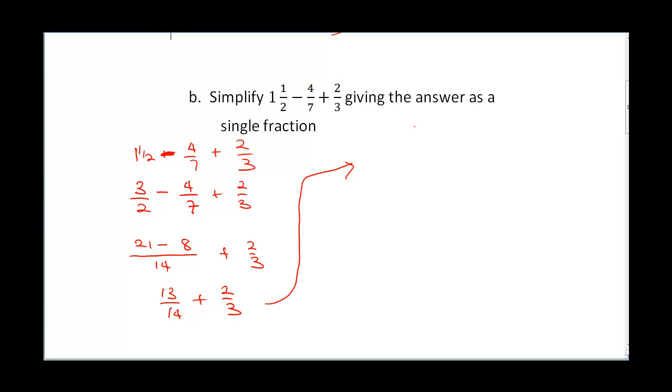At this point, the LCM of 14 and 3 is going to give us 14 multiplied by 3, that will give us 42. So the LCM is going to be 42. 42 divided by 14 is 3, 3 times 13 will give us 39.